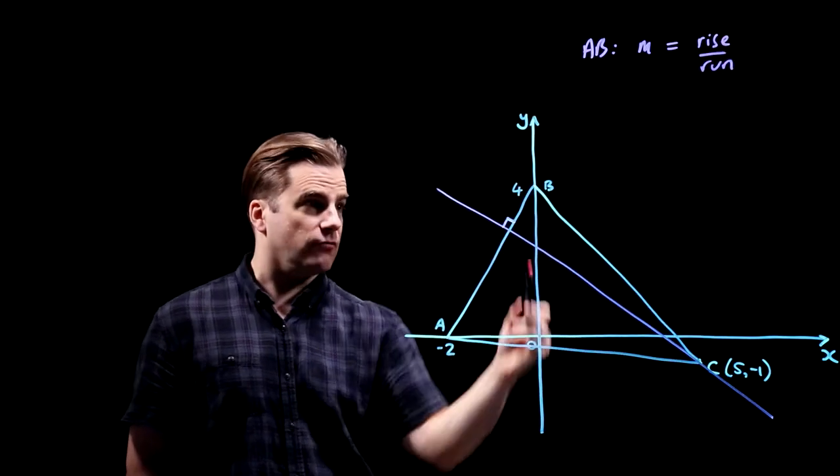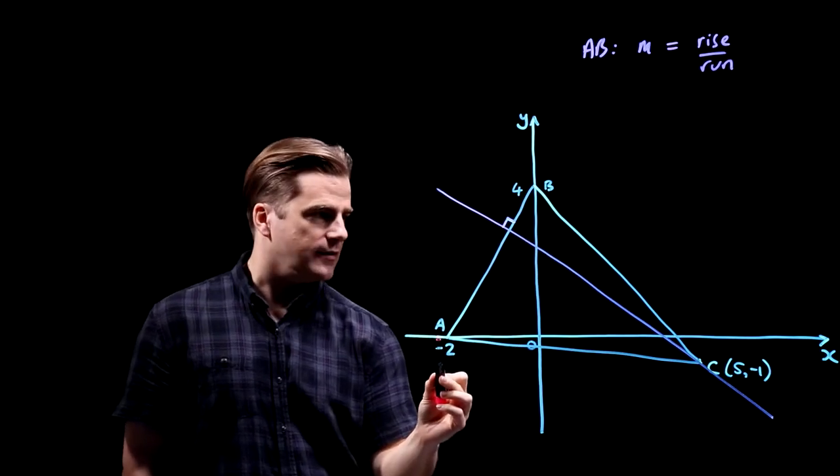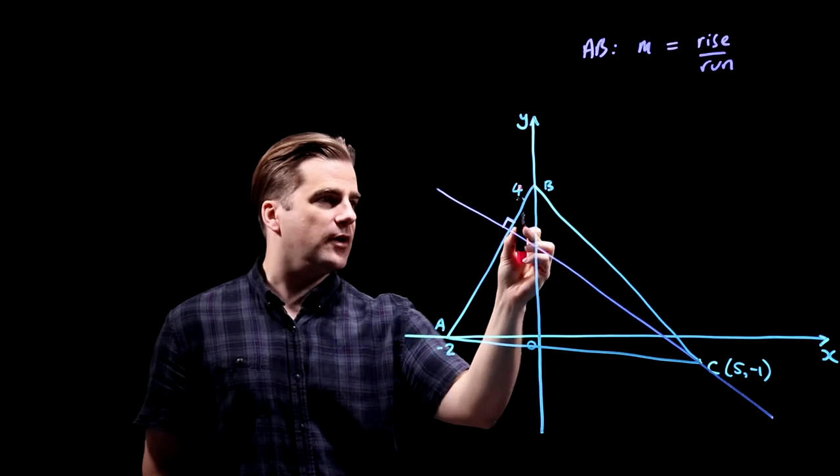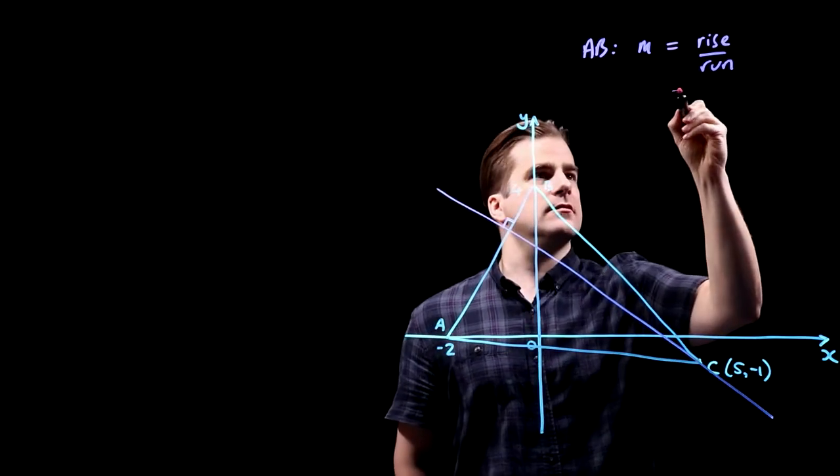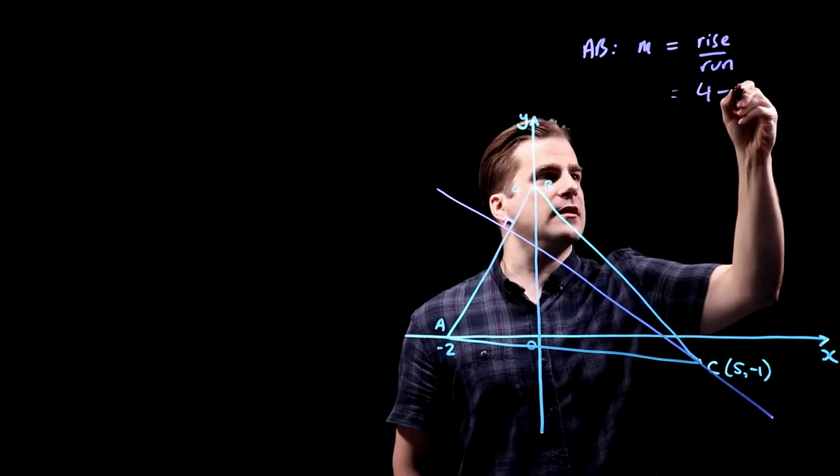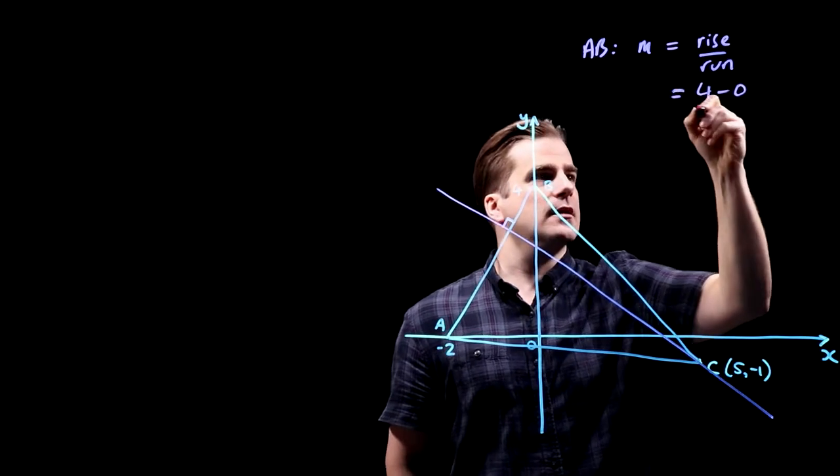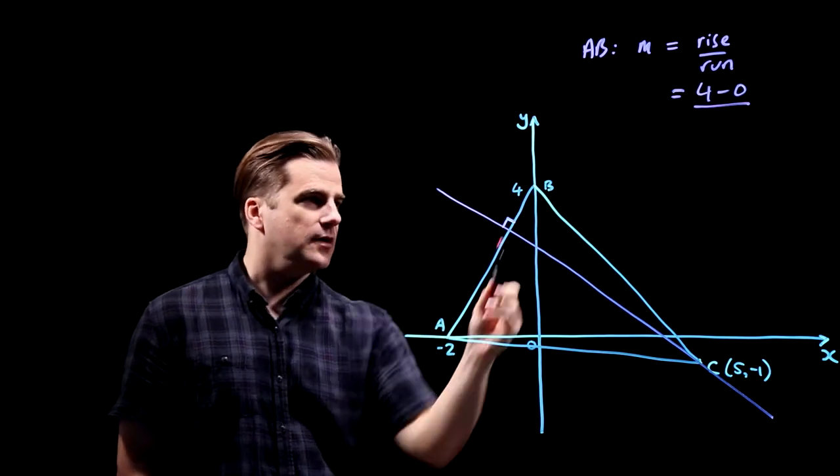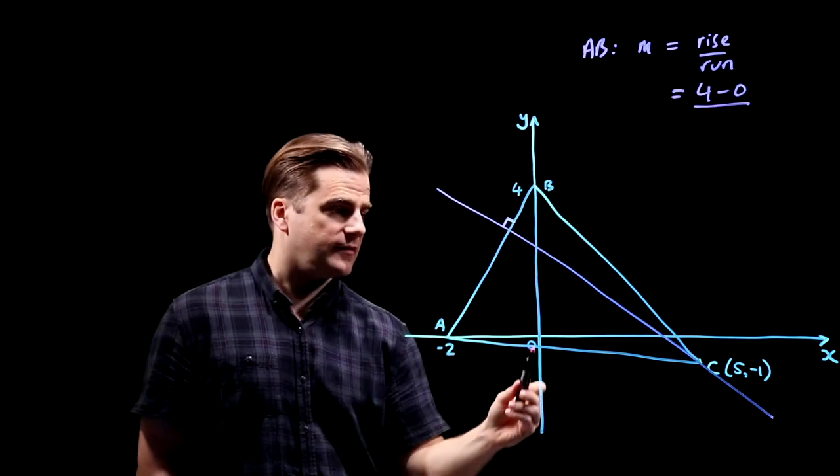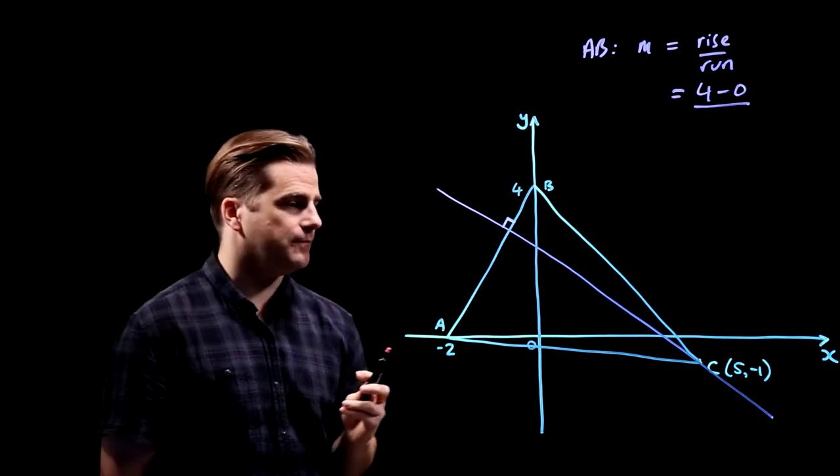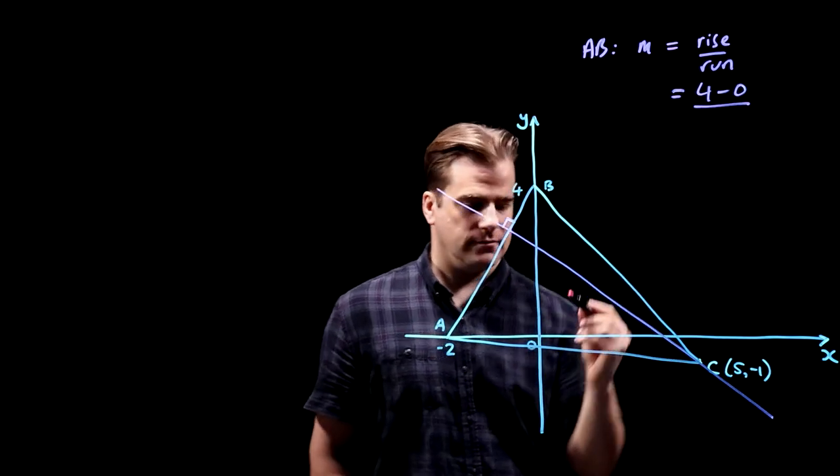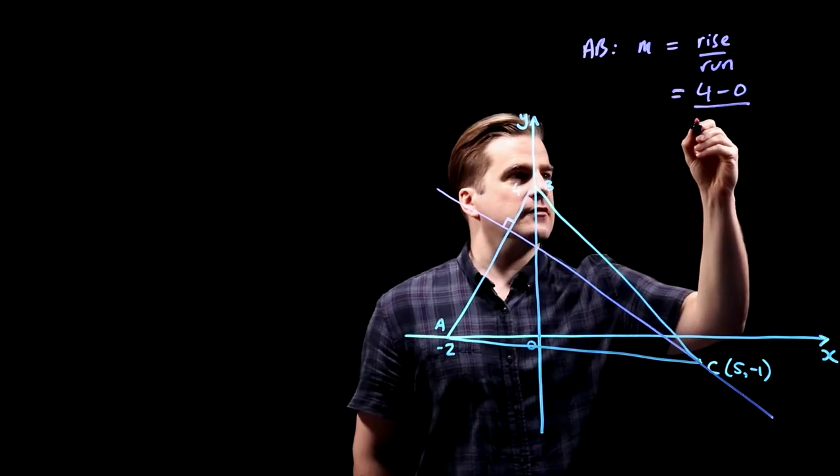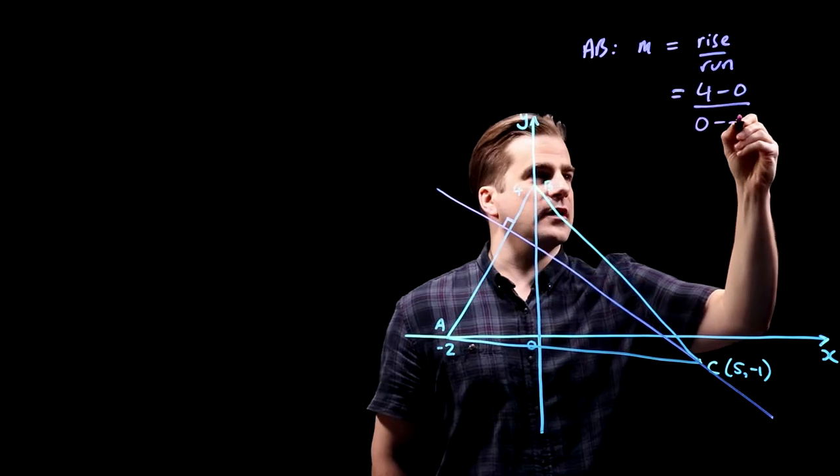So from A to B, what's the rise? Well, A is on the x-axis, so that's y equals zero, and B is at y equals four. So the rise is four minus zero. What's the run? Well, it's going from minus two—B is on the y-axis, so that's zero. So it's going from minus two to zero. So that's that distance, that point minus that one. So zero minus minus two, if you like.